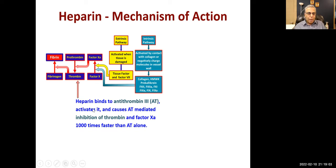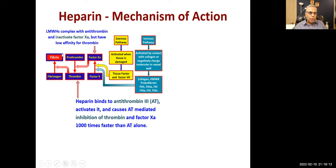Mechanism of action: heparin binds to antithrombin III, activates it, and causes antithrombin-mediated inhibition of thrombin and factor Xa — 1000 times faster than antithrombin alone. A complex of heparin and antithrombin is therefore a thousand times more potent in inhibiting thrombin and factor Xa. Low molecular weight heparins complex with antithrombin and inactivate factor Xa but have no affinity for thrombin.